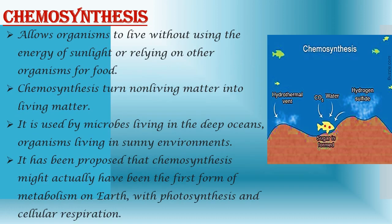Chemosynthesis allows organisms to live without using the energy of sunlight or relying on other organisms for food. Like photosynthesis, it allows living things to make more of themselves by turning inorganic molecules into organic molecules — turning non-living matter into living matter. Today it is used by microbes living in the deep oceans where no sunlight penetrates, but also by some organisms in sunny environments such as iron bacteria and some soil bacteria.